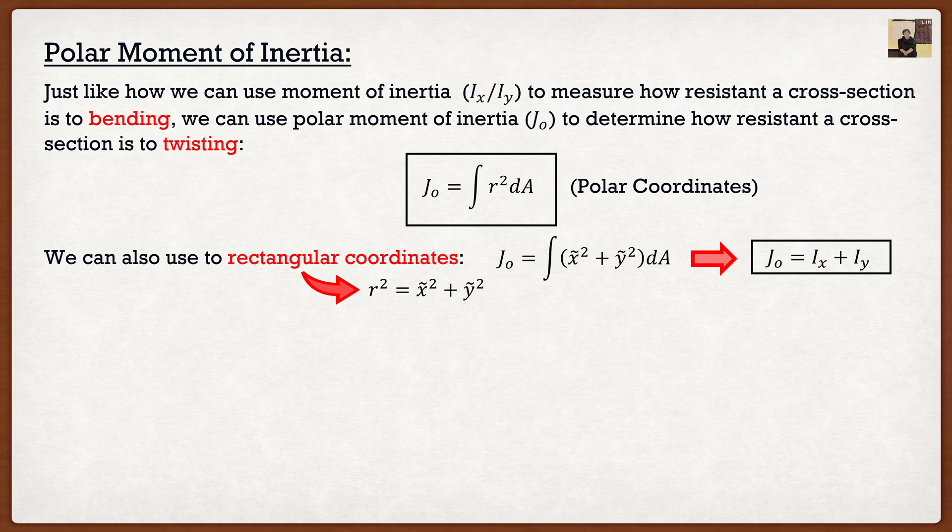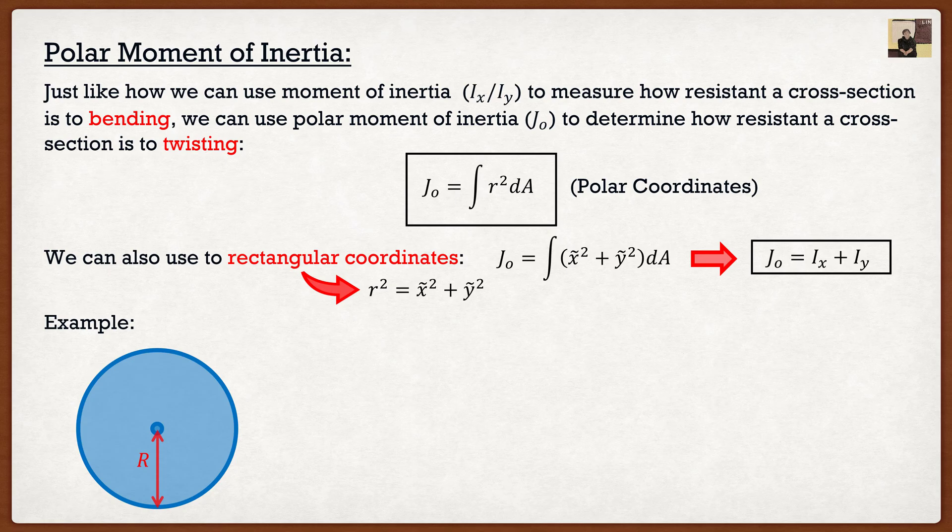But the reason why we have to typically keep in polar coordinates is a lot of the objects that we consider for twisting action are actually circles. So if we had a circle here with a radius r, we can actually find its polar moments of inertia using the formula above. Now it's going to follow basically the same steps as before, where the first one is we need to take that dA term and express it in terms of something else.